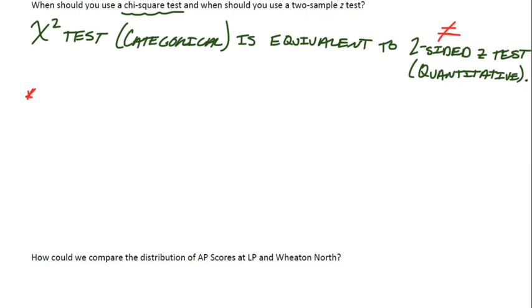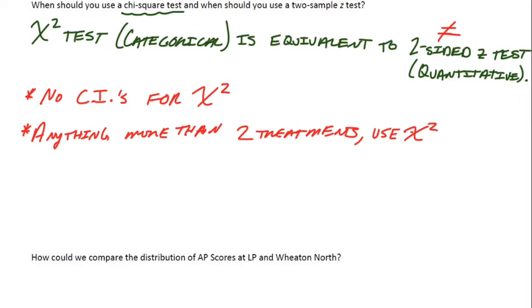A couple other things I want to point out: there's no confidence intervals for chi-squared. These are the last notes for the chapter, and we haven't talked about confidence intervals because there aren't any for chi-squared. We just saw an example where we could use a two-sample z-test or a chi-squared test, but that was when there were only two proportions present. Anything more than two treatments, you should absolutely use chi-squared, because then you don't just have P1 and P2—you have P1, P2, P3, P4. If there's only two treatments, you could consider a two-sample z-test, but otherwise, if there's more than two treatments, use chi-squared.